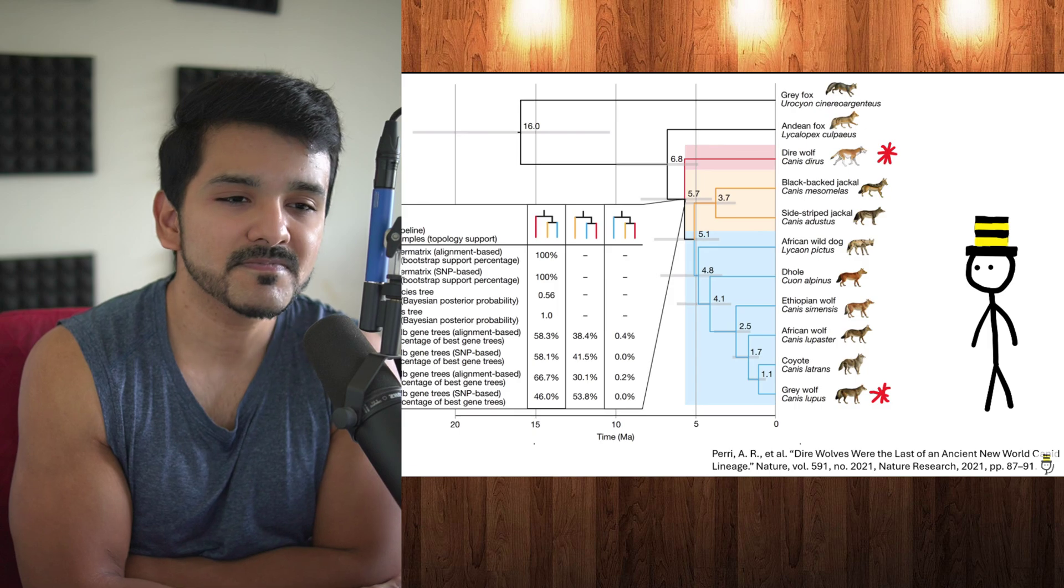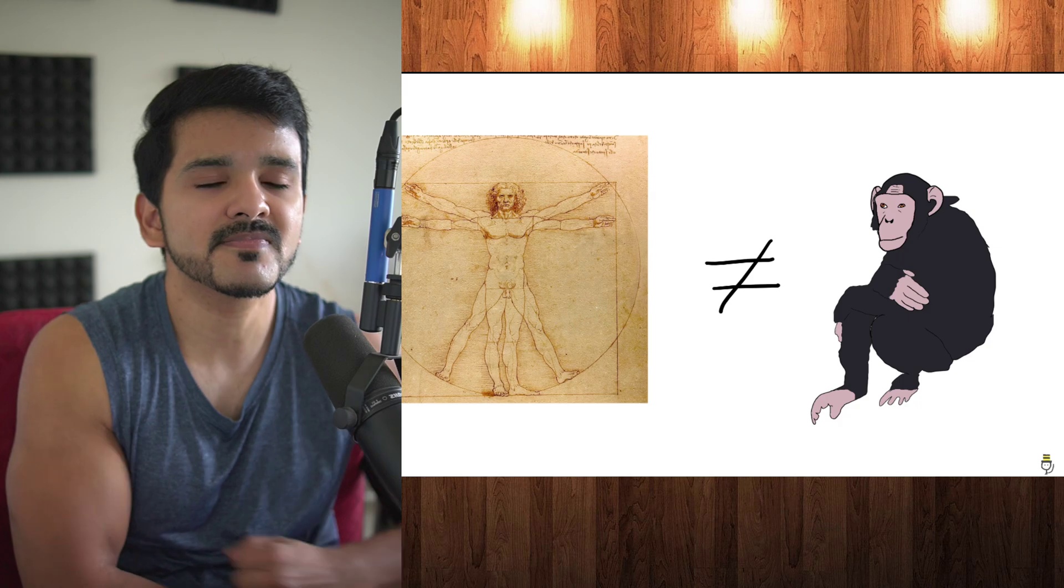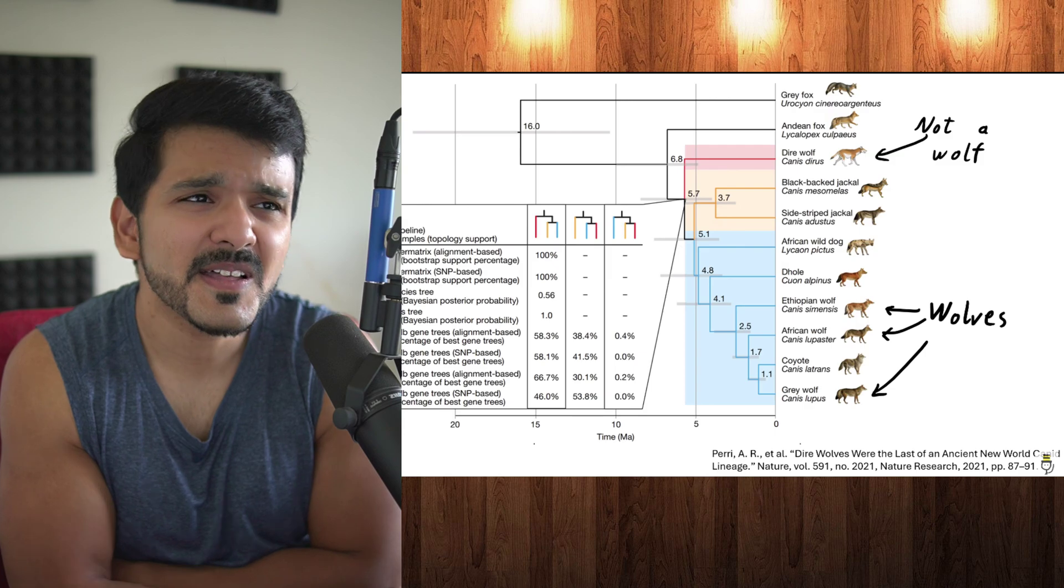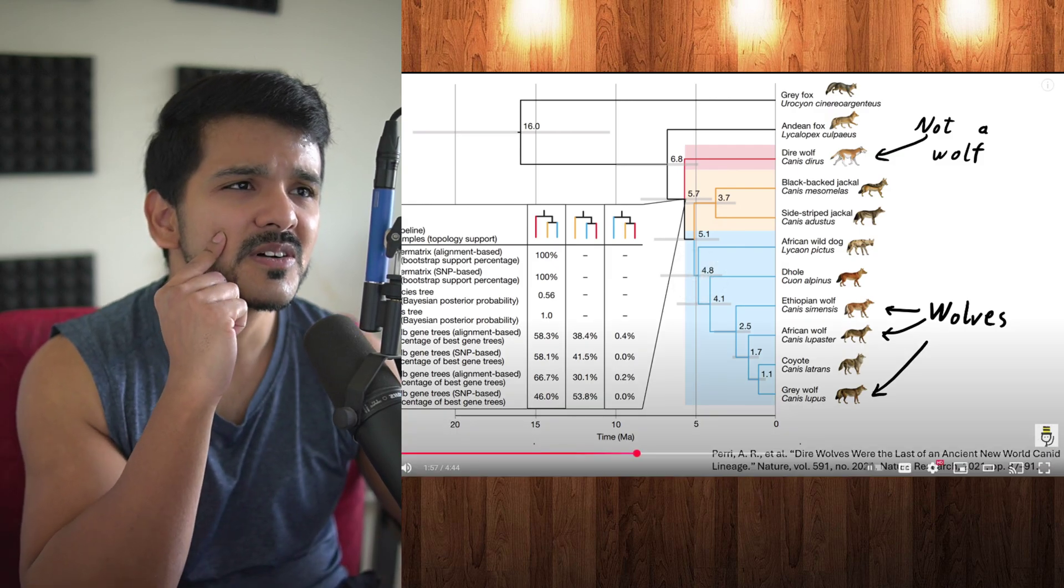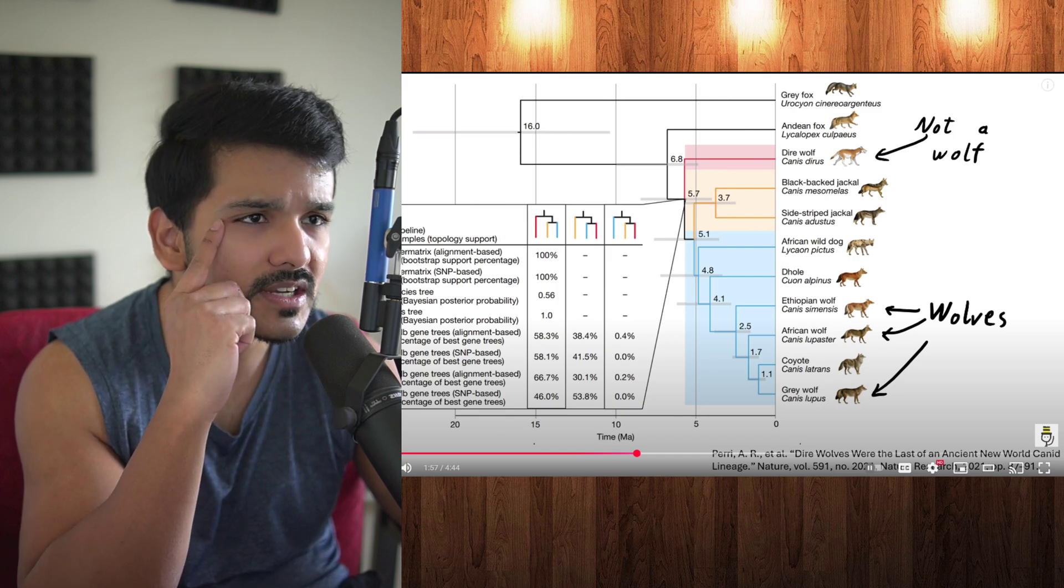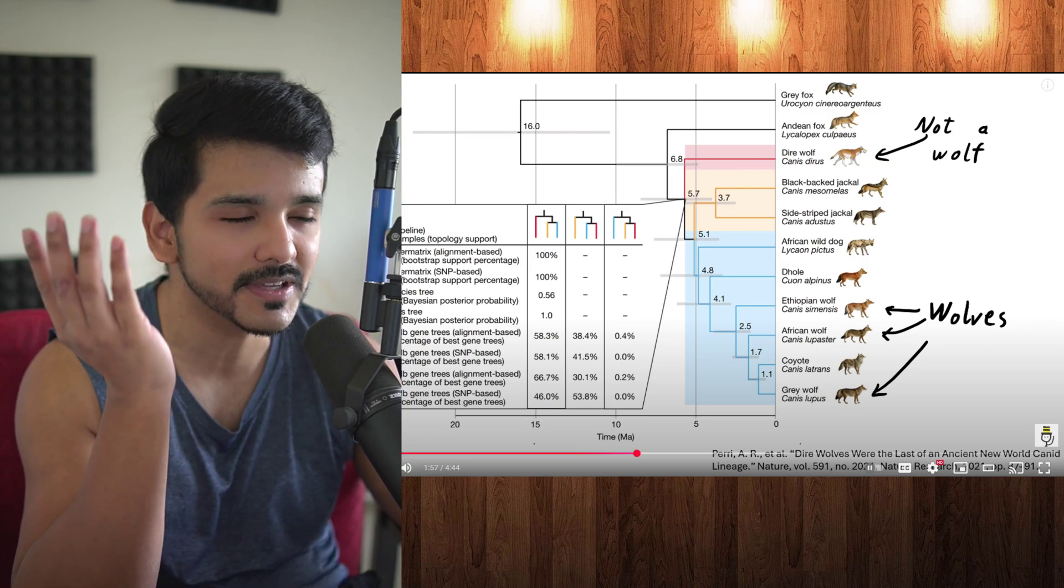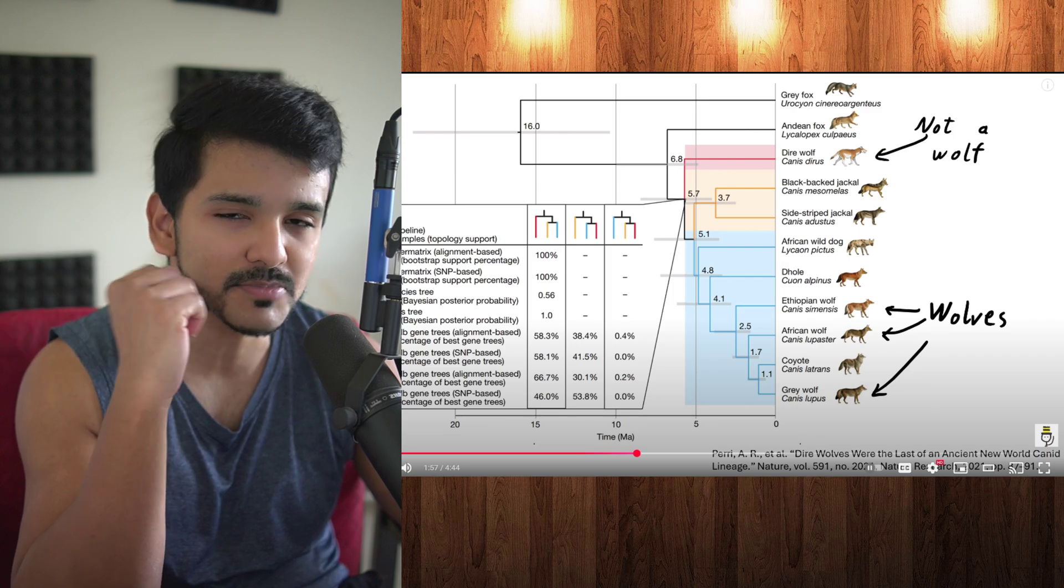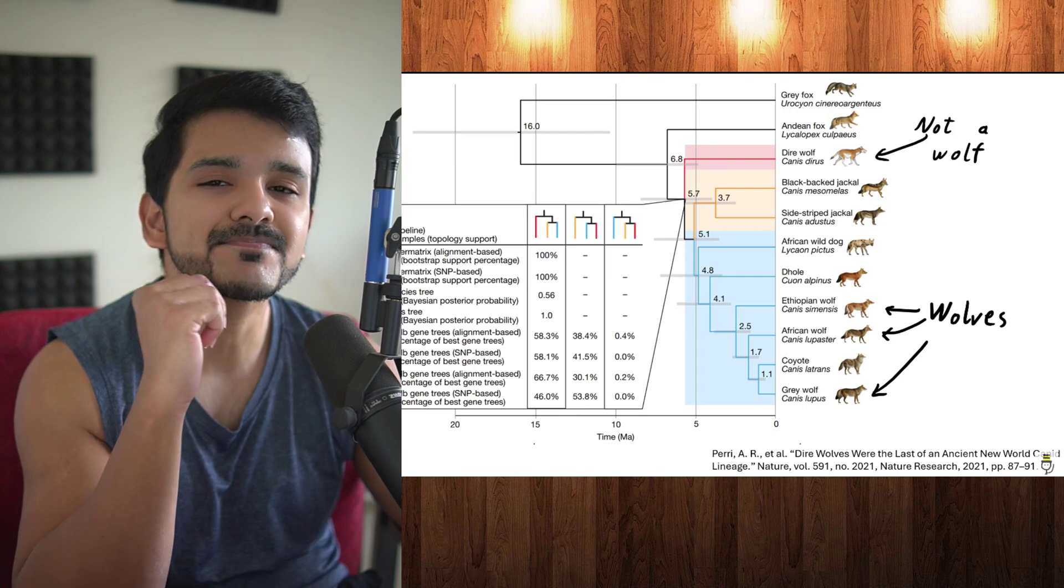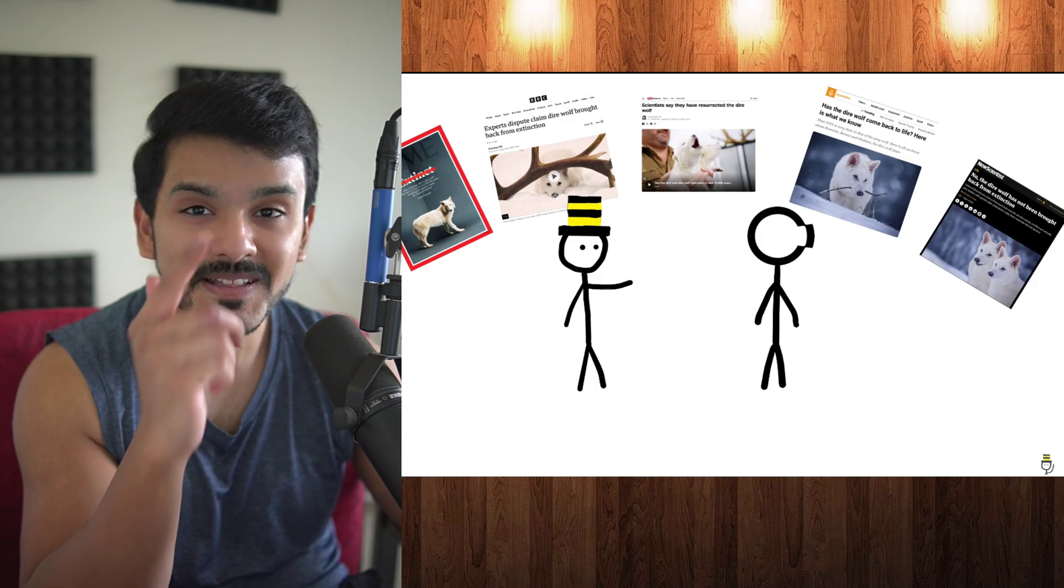The last common ancestor of direwolves and gray wolves lived around 5.7 million years ago, making them almost as distantly related as humans are from chimpanzees. Technically direwolves aren't even wolves - they're in a different genus, Canis dirus. This happens a lot. After watching Casual Geographic, I'm like, why even call it a wolf? I guess because it looks similar because they faced similar evolutionary pressures.